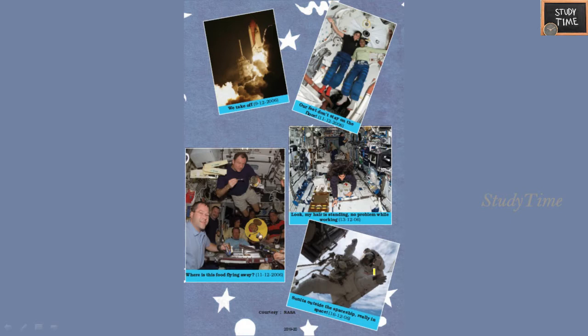In 2006 they took off. This picture shows them flying in space. Since there is no gravity, the food was floating. You can see her hair is not facing down — it is just flying in the air. This is Sunita outside the spaceship, showing the reality of life in space.